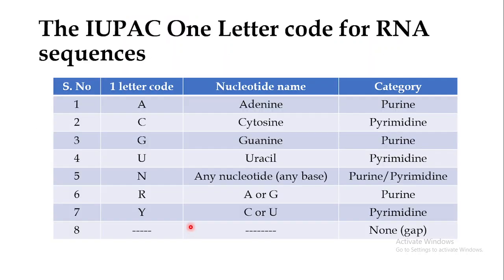This table shows the single letter codes for RNA sequences, because when you get an RNA sequence from a sequencing company they use these single letter codes. The letter A represents adenine, which belongs to the purine family. C represents cytosine, which is a pyrimidine. G represents guanine, and U represents uracil. When there is an N in the RNA sequence it means the nucleotide can be any base — adenine, cytosine, guanine, or uracil.